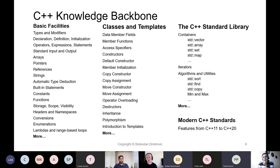After that, we can move on to classes and templates. Let's look at what makes a knowledge backbone regarding classes. We start with an empty class, then introduce data members, function members, and discuss access specifiers. Then we move on to special members such as constructors, destructors, copy assignment, move assignment, move semantics, copy semantics, and then operator overloading, and so on.